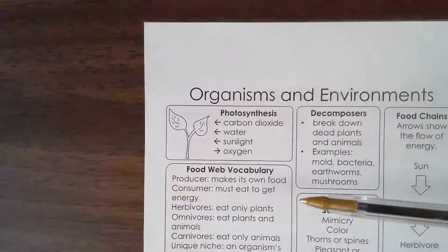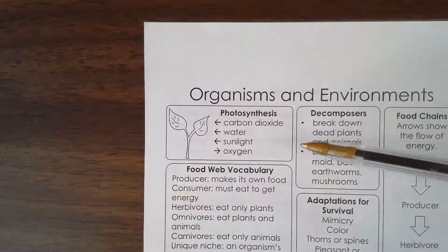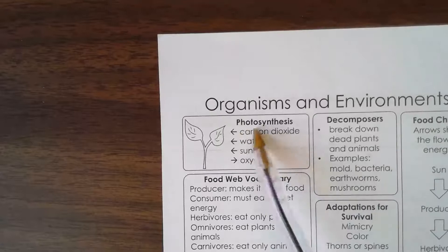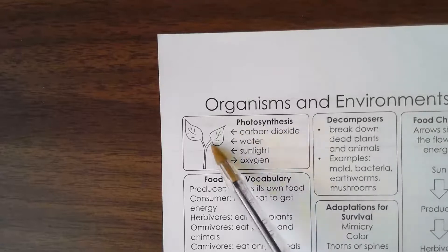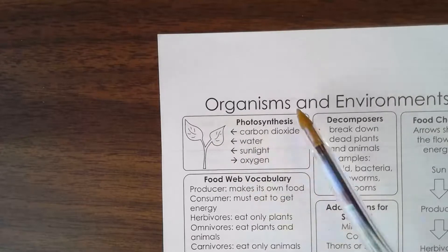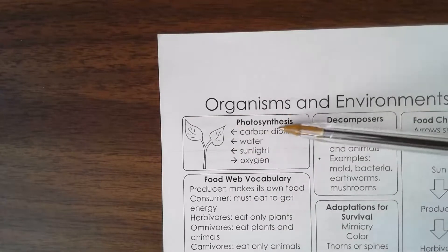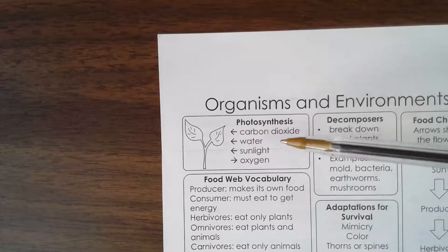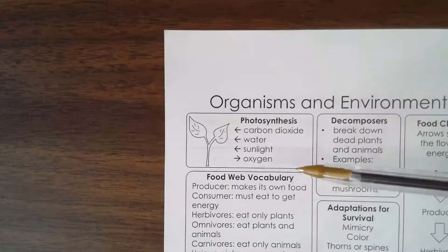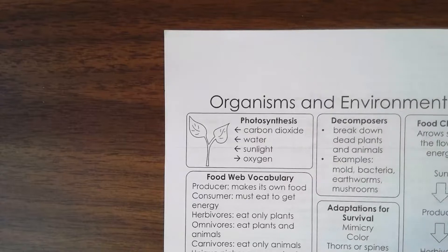Organisms and environments. Photosynthesis: in order for photosynthesis to happen, you need carbon dioxide, water, and sunlight. The oxygen is put out — that's the output. Leaves help us breathe because they suck in the carbon dioxide we breathe out, the water we water them with, and the sunlight the sun gives them. In return, they give us oxygen so we can breathe.